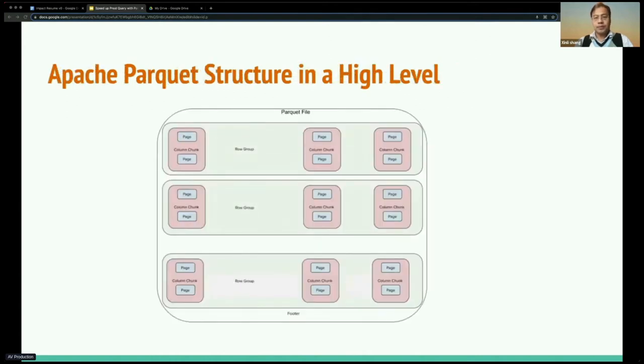Just a little bit of background about Parquet format. A Parquet file consists of a footer and one or more row groups. Each row group has all the columns that the table has, called column chunks. Each column chunk is further divided into pages. Page is a unit for I/O reading and also for encoding, compression, and encryption.